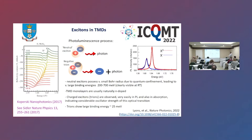However, most of our studies are done at low temperature. We can also see more exotic versions of excitons — here we have the negative trion, which is simply an exciton with an excess electron bound. This has a binding energy of about 25 meV and is very prominent in both the PL spectra and absorption spectra at low temperature.